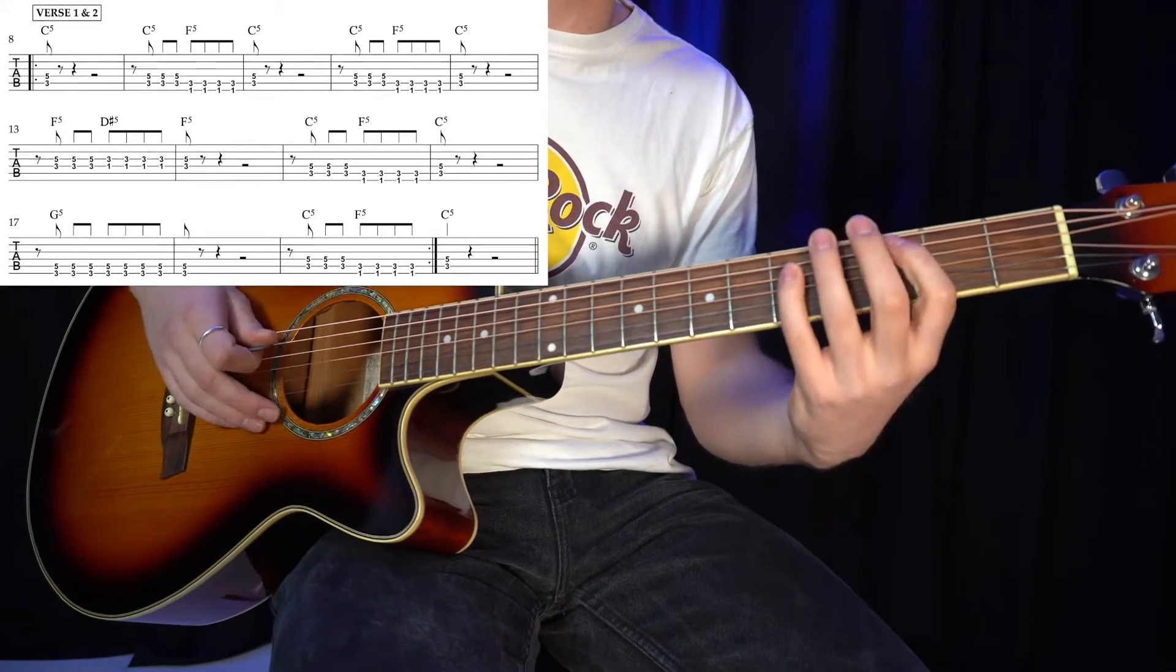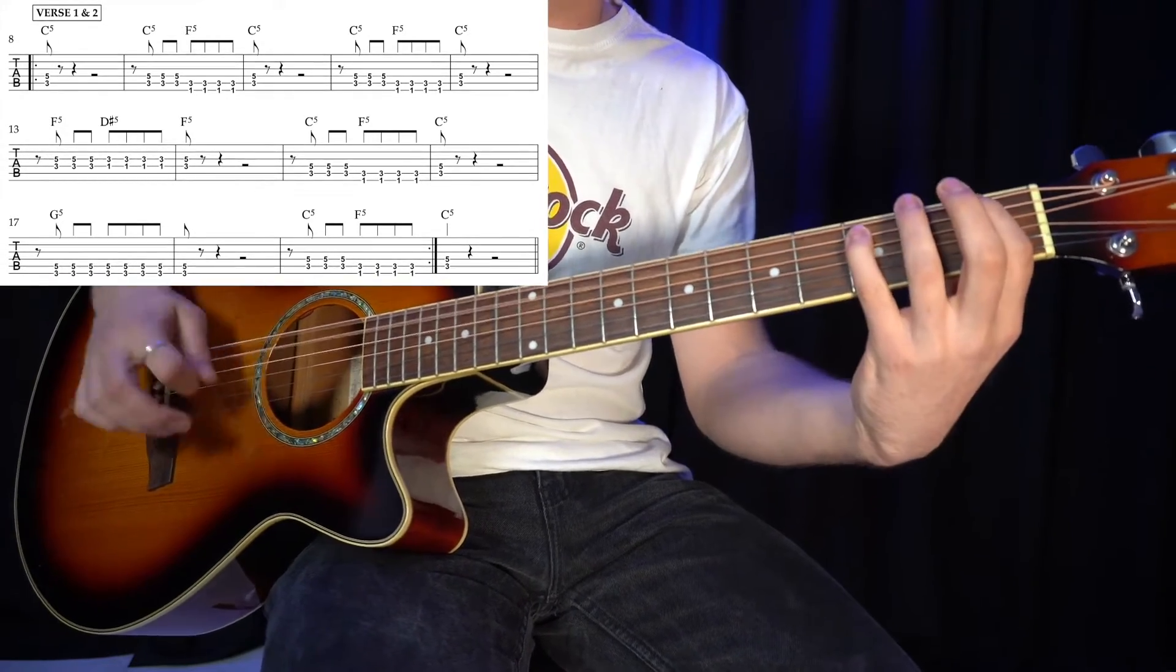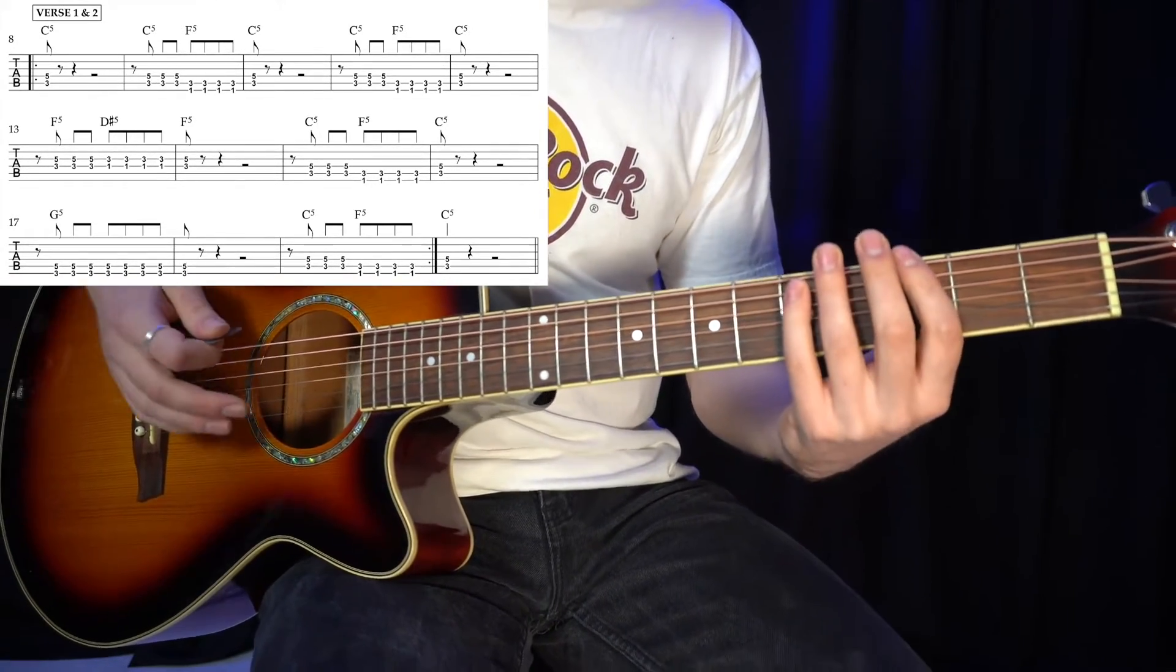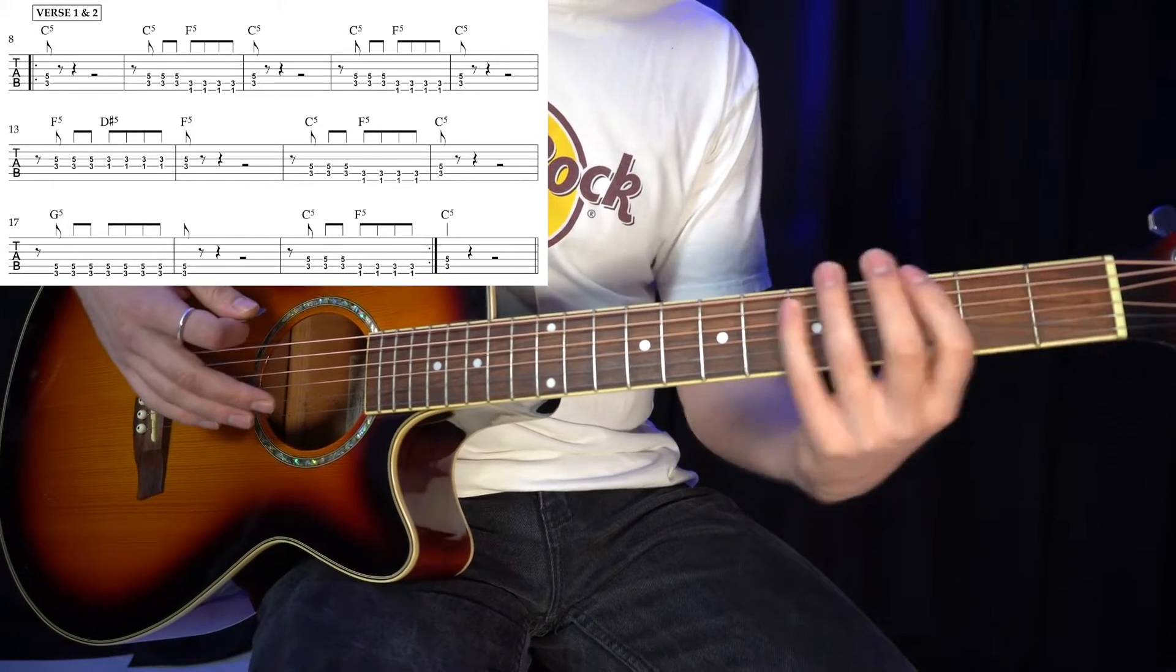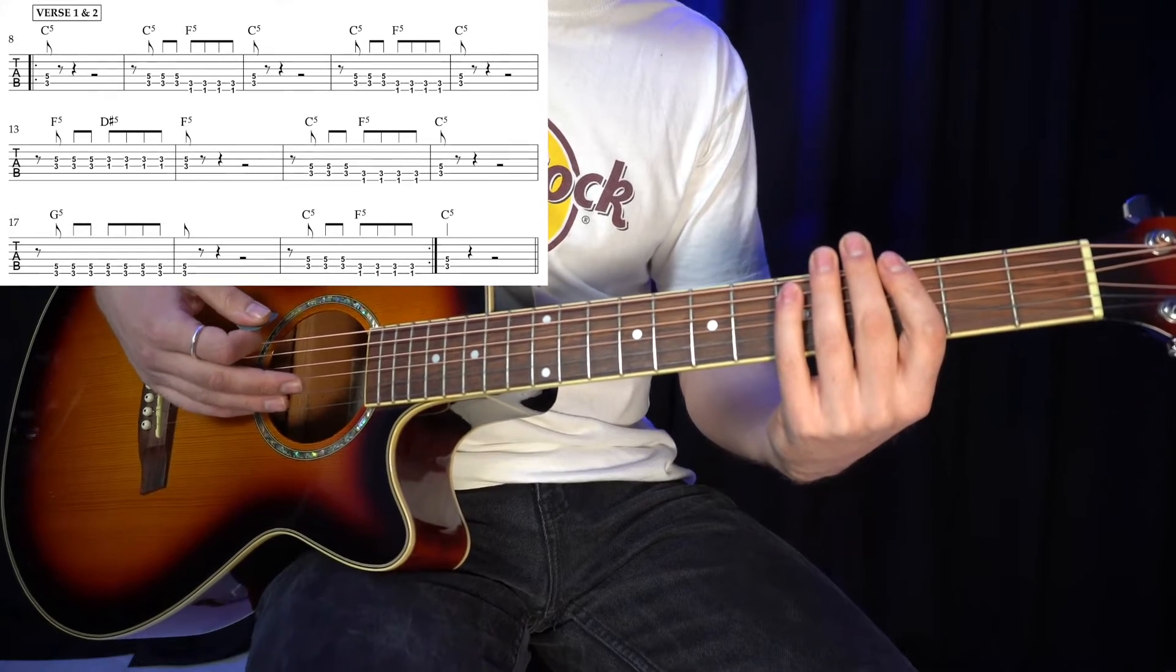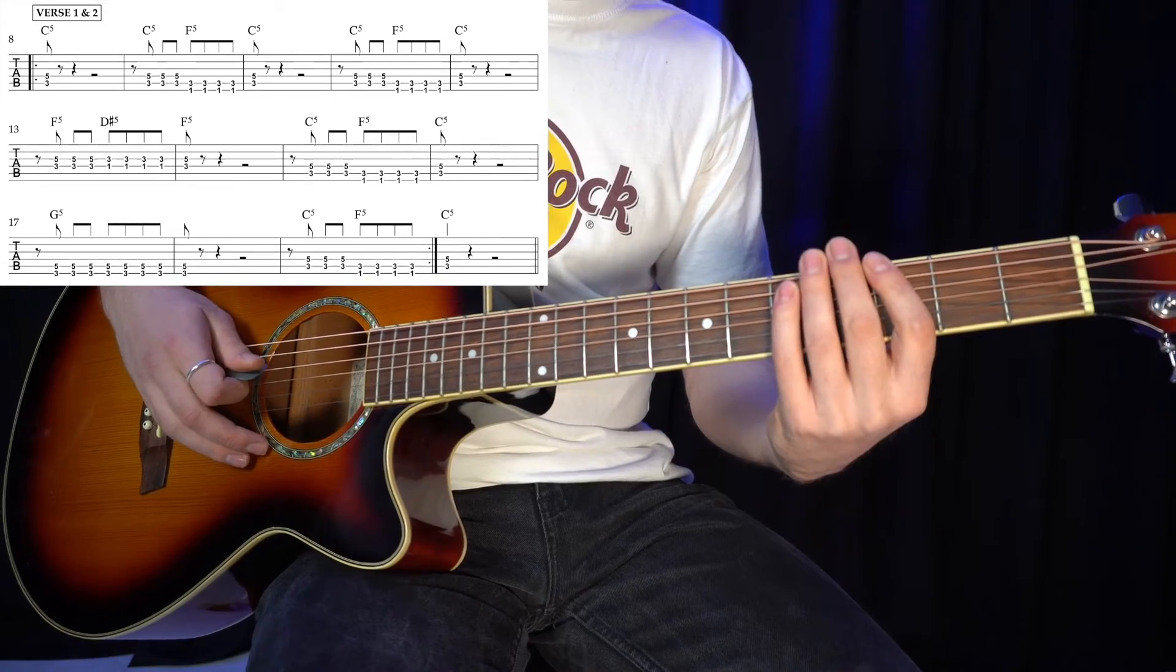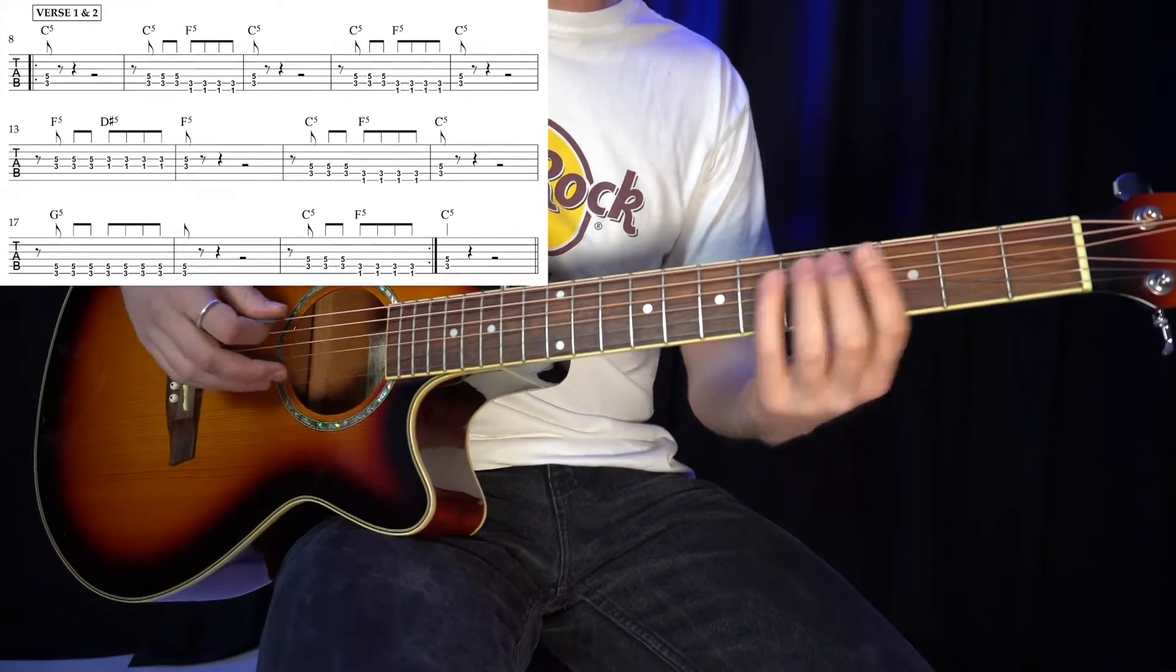And then we go back to the C to the F pattern. We'll do that once on its own. So after we've done that, we've then got one bar of this G. And this is just no changing and moving around on this one, it's just the G. So we go one, two, three, and. Just playing that G5 chord on its own. And then we're back into the riff.